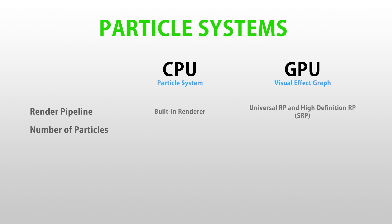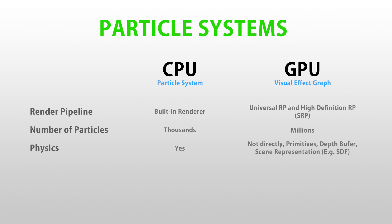For the number of particles, the built-in supports thousands of particles, whereas the visual effects graph supports millions. The built-in runs on the CPU, so it can directly interact with the physics system, whereas the visual effects graph cannot interact directly, but it can do it with some complex methods. You can use C-sharp scripts to directly modify anything about the built-in particle system, like you can access stats for each individual particle and listen to collision events. Whereas in the visual effects graph, you have some limitations, since you are accessing data on the GPU, but you can access and modify exposed properties and interact with custom events. Lastly, the built-in particle system cannot read frame buffers, but the visual effects graph can.